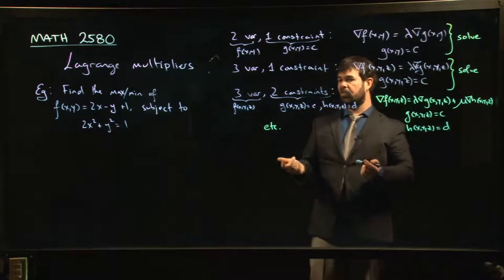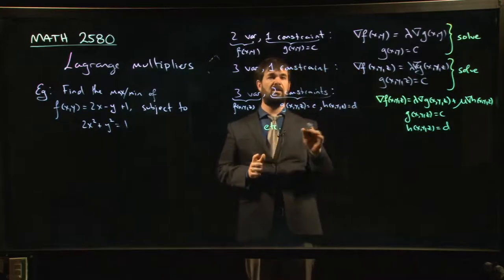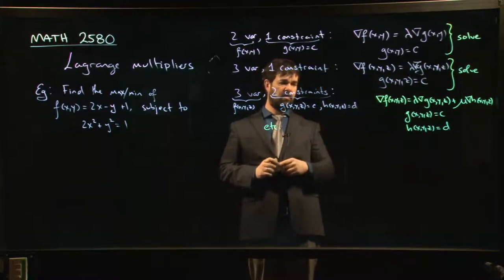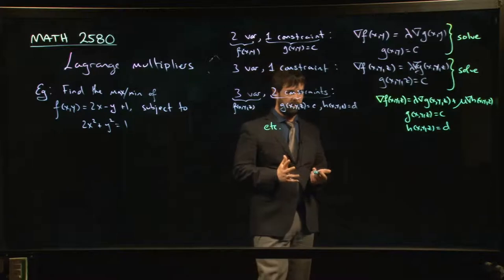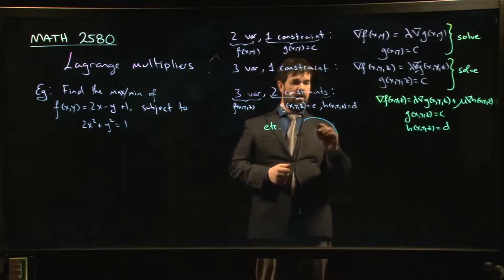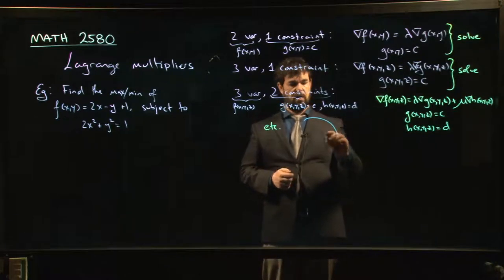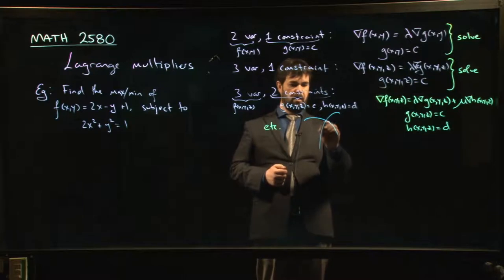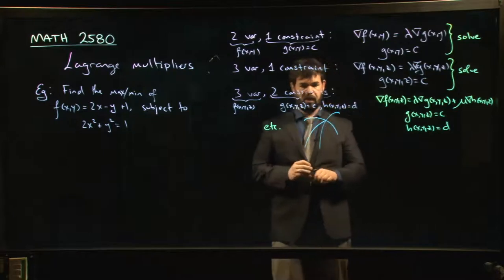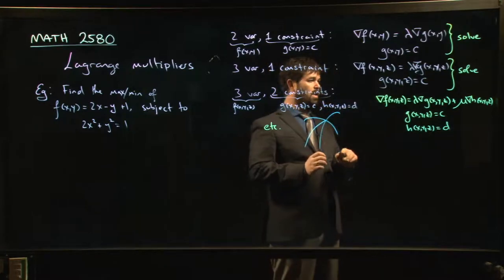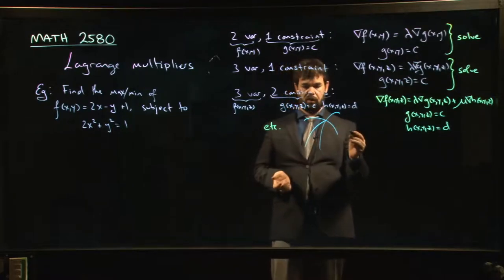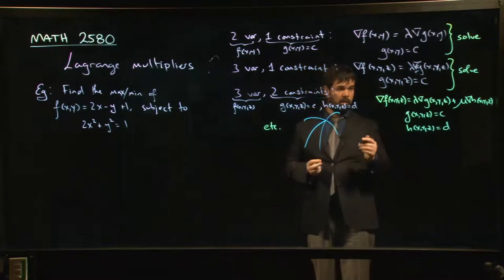With three variables, you can actually consider two constraints. Because a constraint in three variables is a surface. And if you intersect two surfaces, they're probably going to intersect along some sort of curve. So you have one surface, and then you intersect with another surface. And chances are they're going to meet along some kind of curve. And the idea here is that curve of intersection for the two surfaces. Again, if you imagine kind of moving along that curve, the tangent vector there is tangent to both surfaces. So it's perpendicular to both normal vectors.